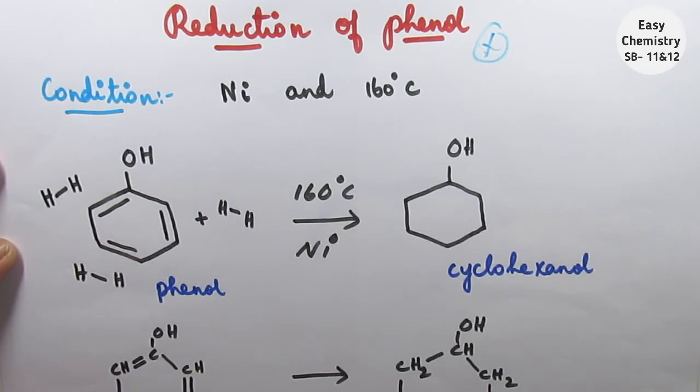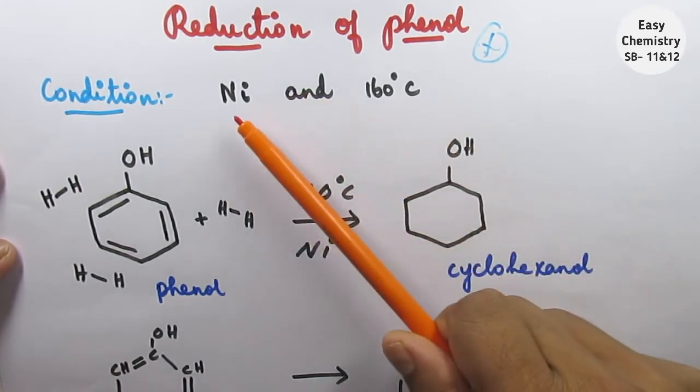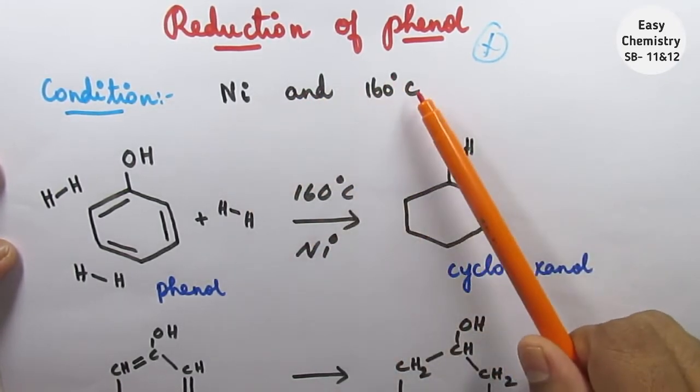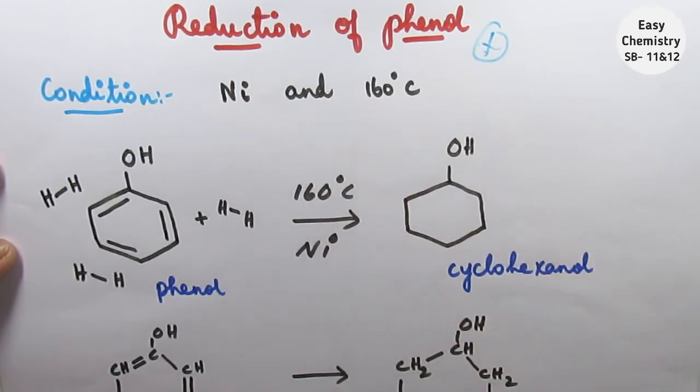Phenol undergoes reduction with hydrogen in the presence of nickel catalyst at 160 degrees Celsius. These are the conditions for phenol reduction.